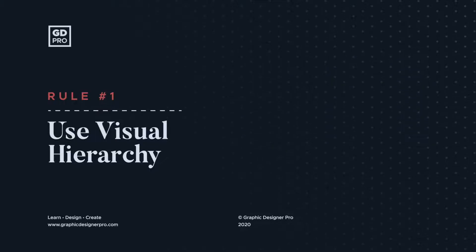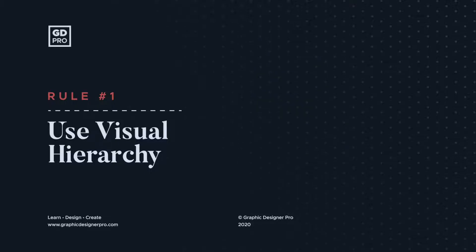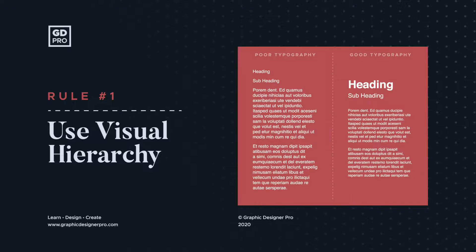It's important to create contrast between these categories so that the order of importance is clear. You can do this with formatting such as font weight and style, size, colour, alignment and positioning, to name a few parameters.